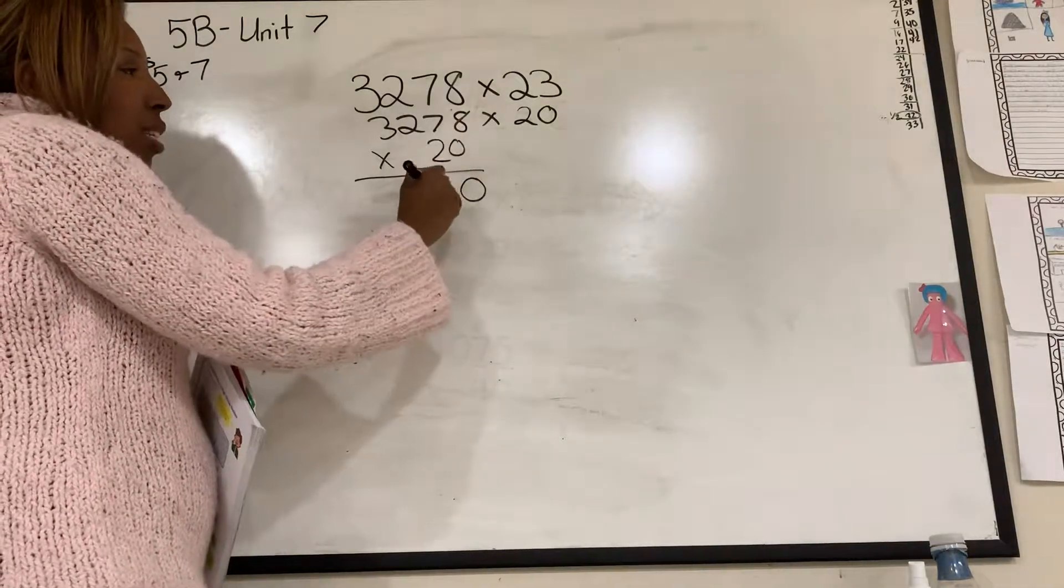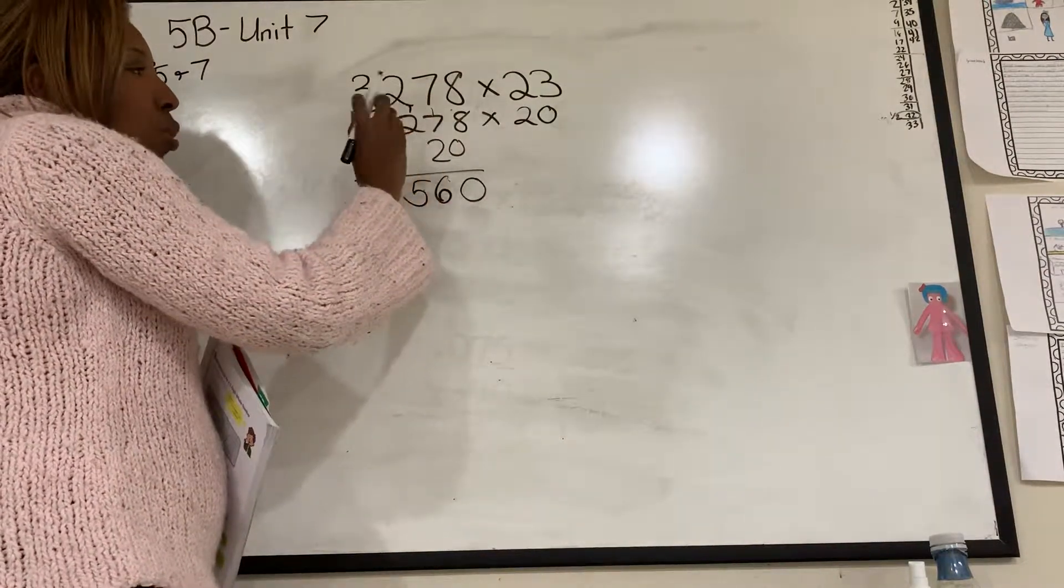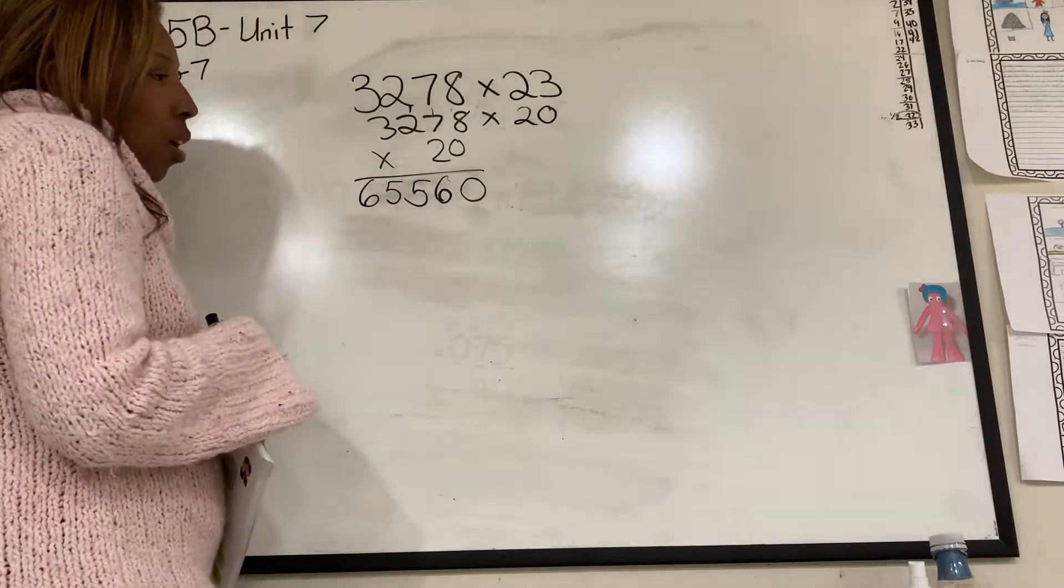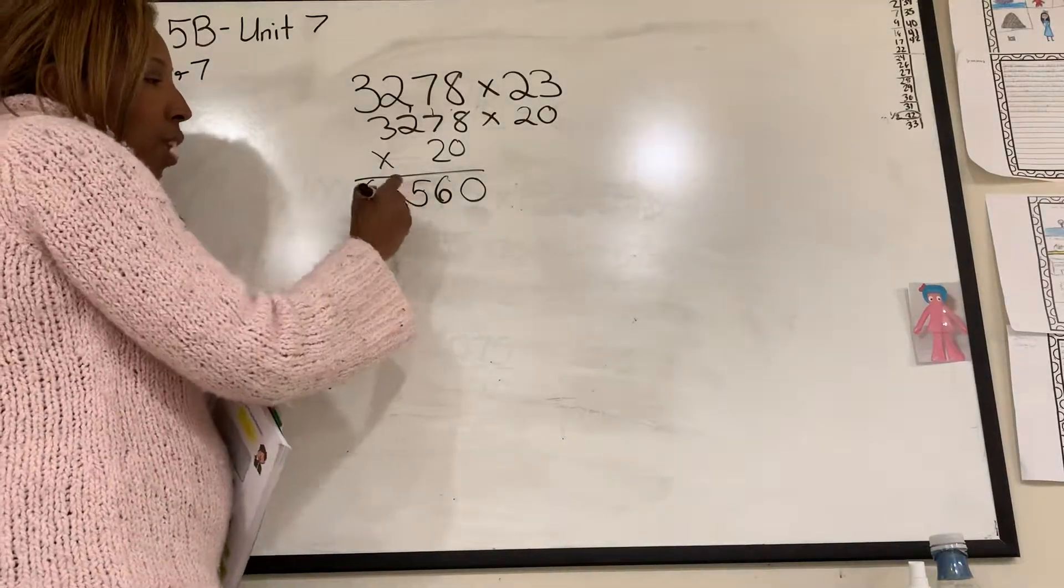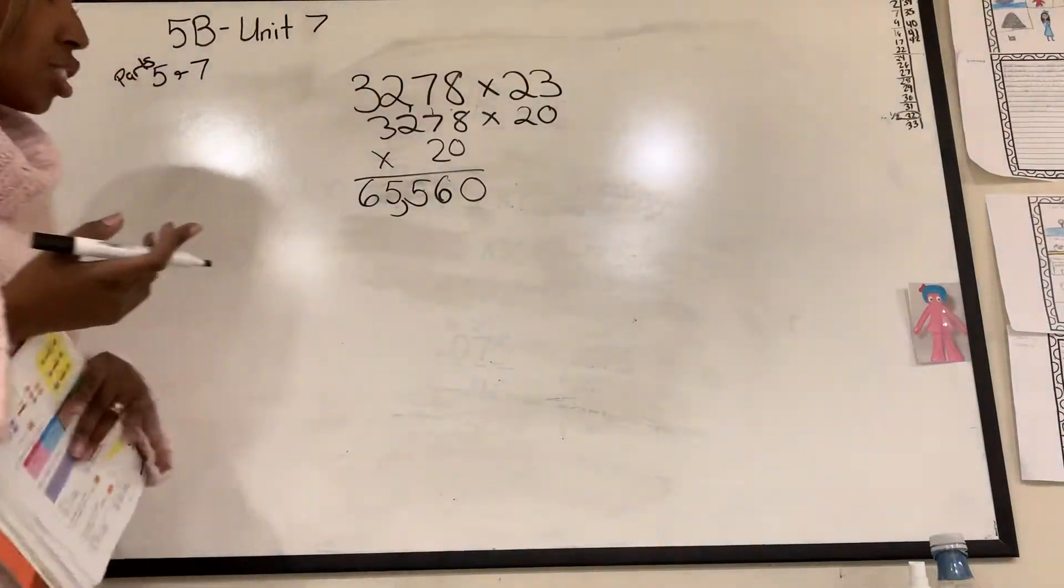And then 8 times 2 is 16, carry the 1. 7 times 2 is 14, plus 1 is 15. 5, carry the 1. 2 times 2 is 4, plus 1 is 5. And 2 times 3 is 6. So now I have my answer. And make sure when you do commas, you always go 1, 2, 3, count backwards to make your comma. That's my answer.